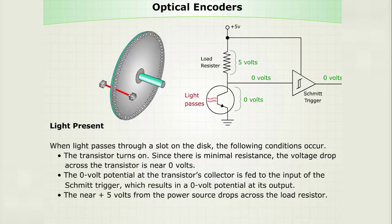When light is present. When light passes through a slot on the disc, the following conditions occur. The transistor turns on. Since there is minimal resistance, the voltage drop across the transistor is near zero volts.